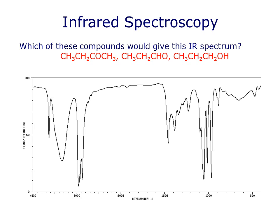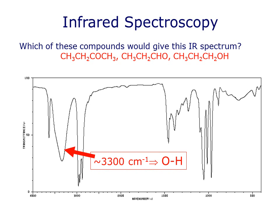Can you put it into practice and decide which of these three compounds is most likely to give rise to this IR spectrum? Note that these compounds are, on the left, an ether, in the middle, an aldehyde, and on the right, an alcohol. Of these three functionalities, only the alcohol has an OH group that would give rise to this strong signal at about 3,300 wave numbers. That's our key to solving the puzzle here, and this must be the spectrum of this third compound, 1-propanol.